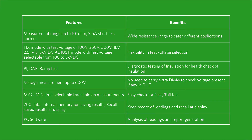Let us see the features and benefits offered by Rishinsu 5DX. Measurement range up to 10 Tera-Ohms. 3 mA short circuit current for wide resistance range to cater to different applications. Fix mode with test voltage of 100V, 250V, 500V, 1KV, 2.5KV, and 5KV DC. Adjust mode with test voltage selectable from 100 to 5KV DC for flexibility in test voltage selection.